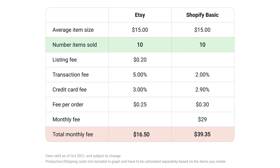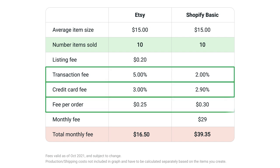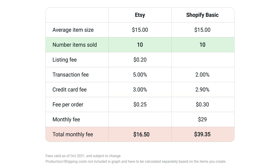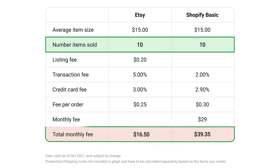Looking at this graph, for each of the sales channels there are additional fees such as transaction, credit card, and fees per order. When you have small amounts of sales, the expenses are much lower on Etsy. However, once you start selling more, there's a point where Shopify becomes cheaper. That means in the long term a sales channel like Shopify makes more sense if you build an audience. There are other factors such as advertising expenses and the production and shipping costs of the products you sell, but it's important to calculate your profit margins and know when to adjust your strategy for the maximum amount of profit.